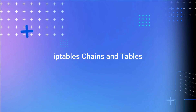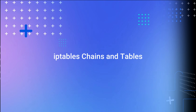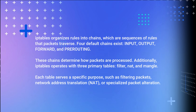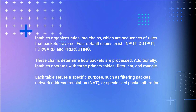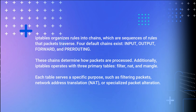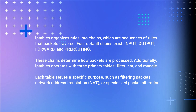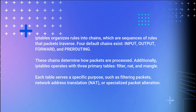IP Tables Chains and Tables. IP Tables organizes rules into chains, which are sequences of rules that packets traverse. Four default chains exist: Input, Output, Forward, and Pre-routing. These chains determine how packets are processed.